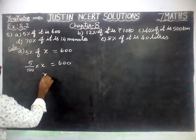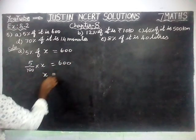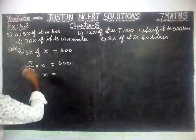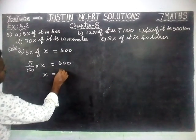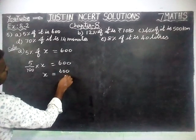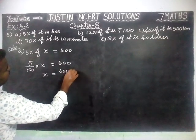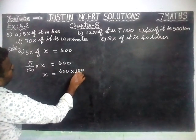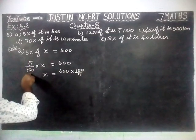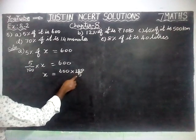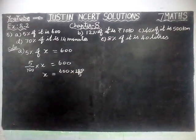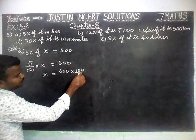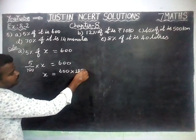Now, X is equal to 600. We are going to take 5 by 100 to the right-hand side. So, 600 into 100 by 5. The reciprocal of 5 by 100 is equal to 100 by 5. Now we are going to simplify.